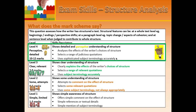To get perceptive understanding, you need to use a range of judicious quotations — the best quotations possible. You need to analyse the effects of the writer's choice of structure, showing you understand why the writer has used such structural elements. To get this perceptive understanding, which is where we should all be aiming, you need to be able to say what the effect of that is on a reader.